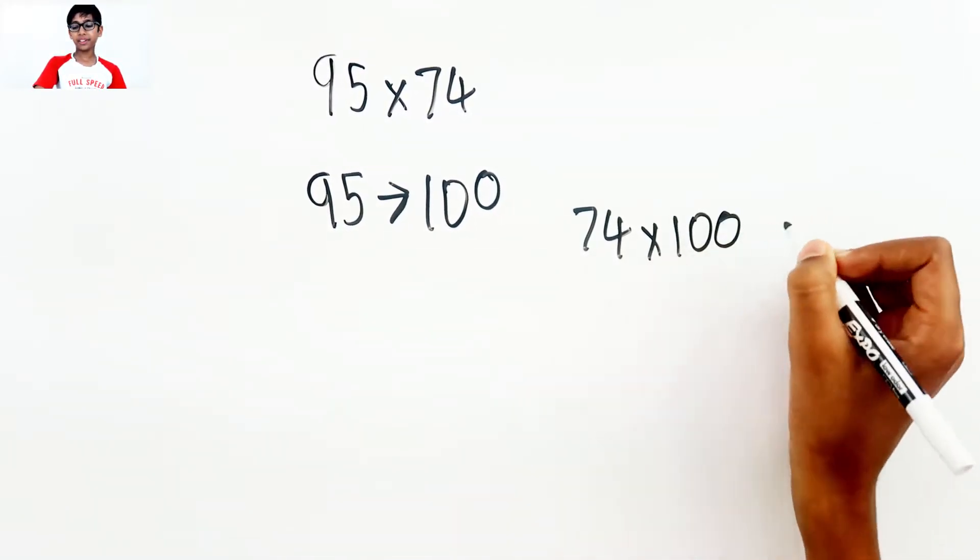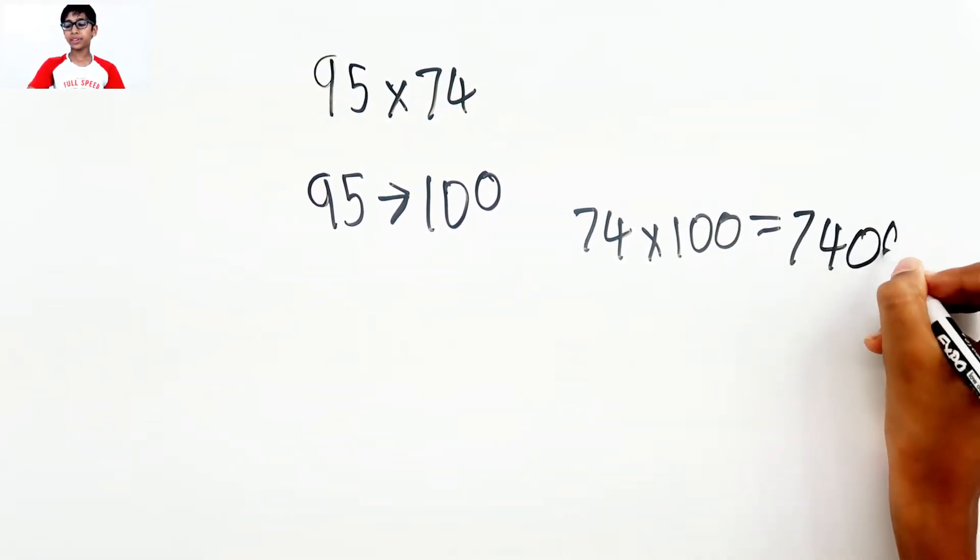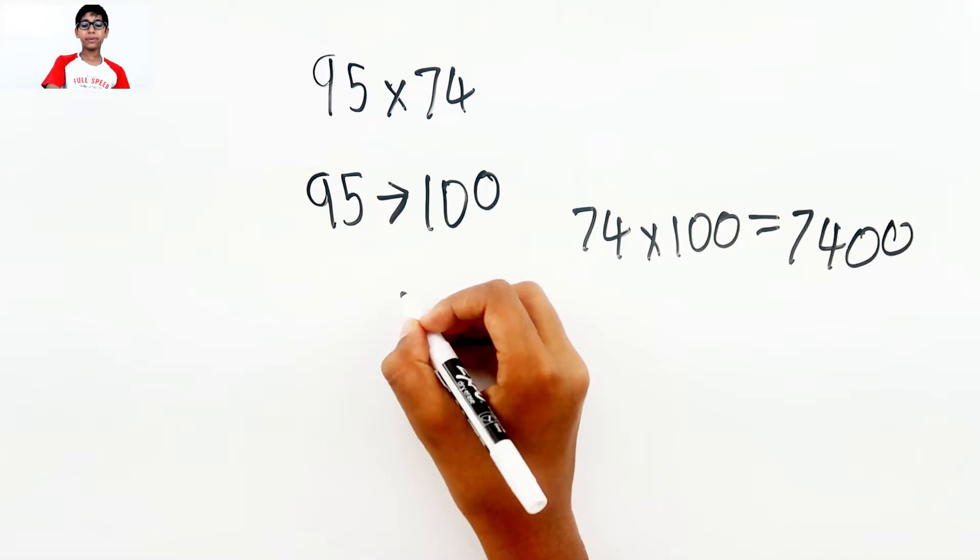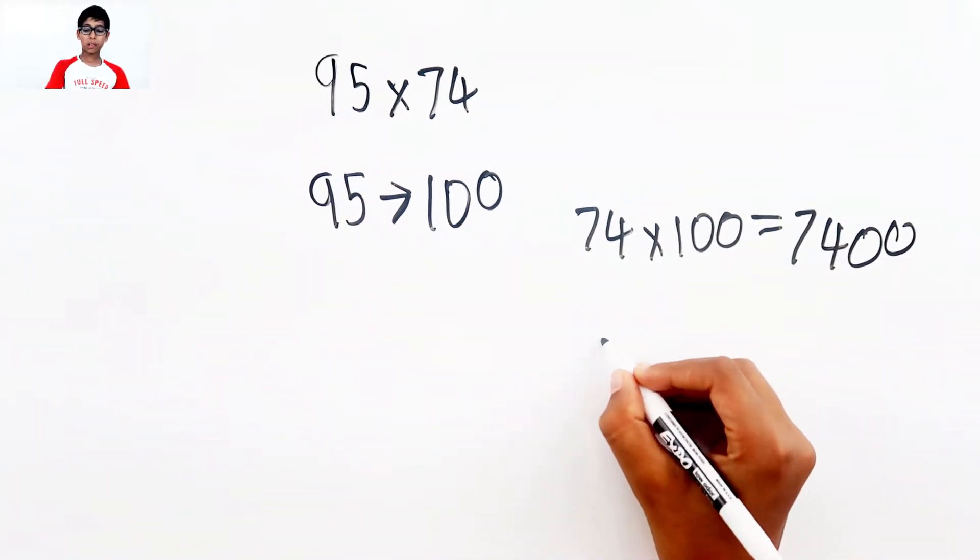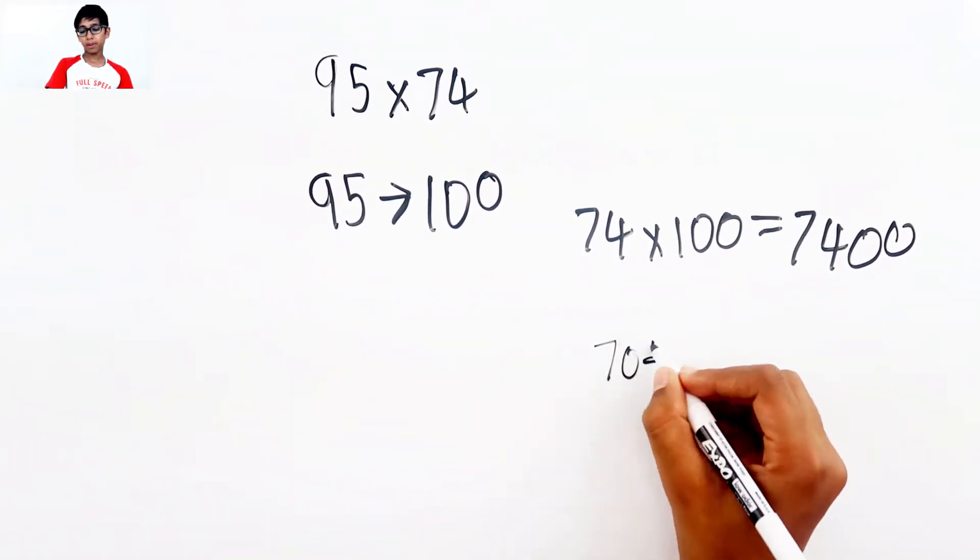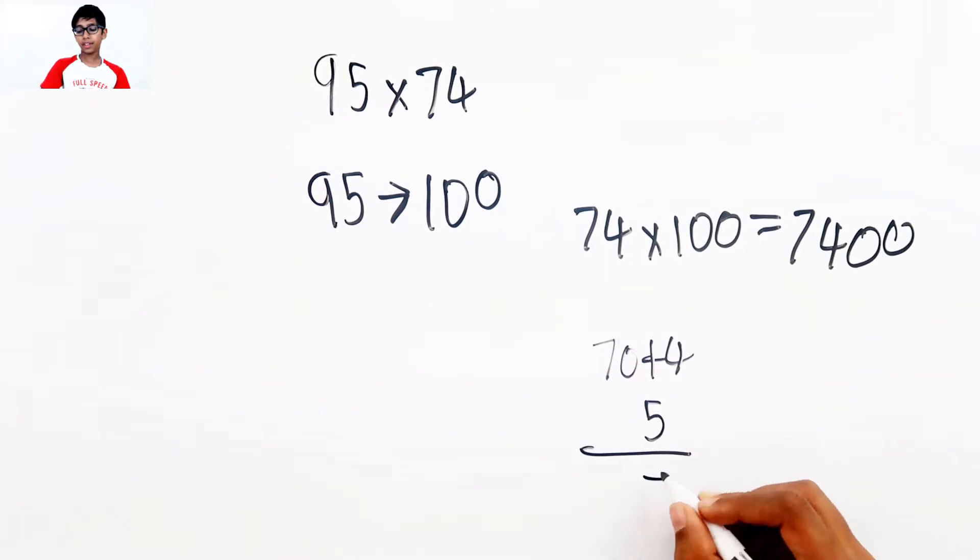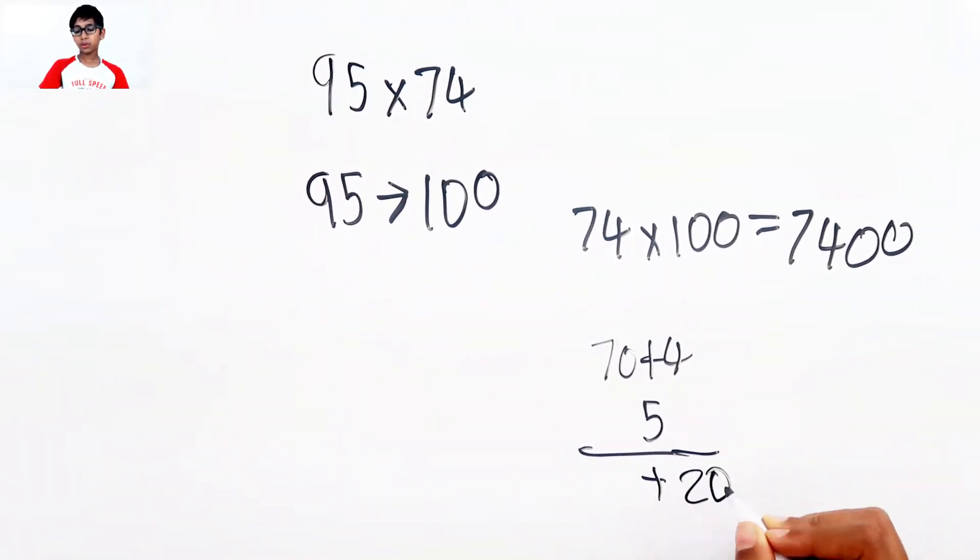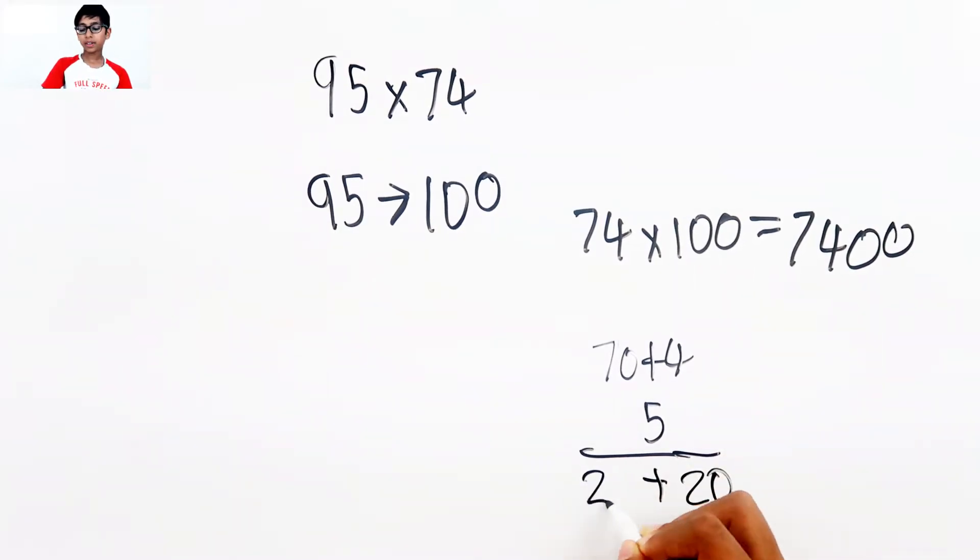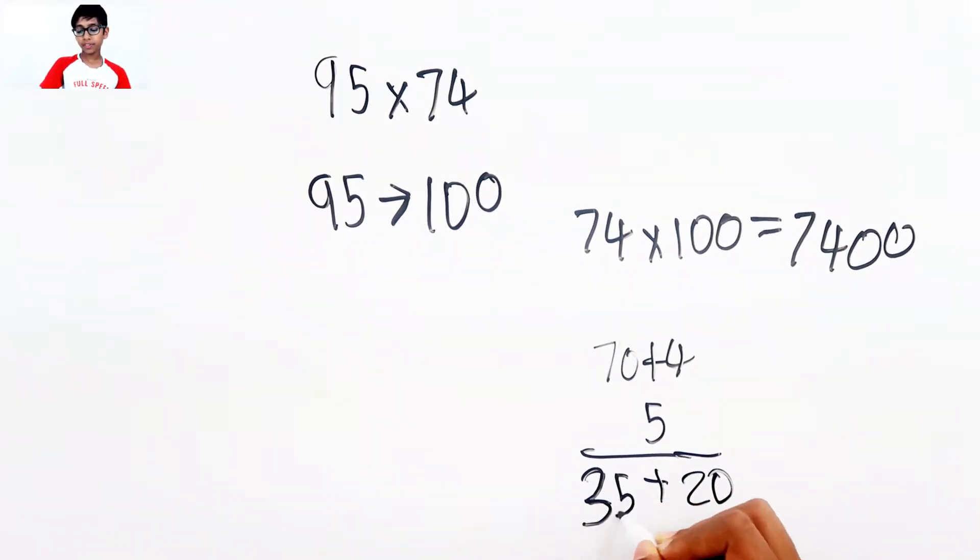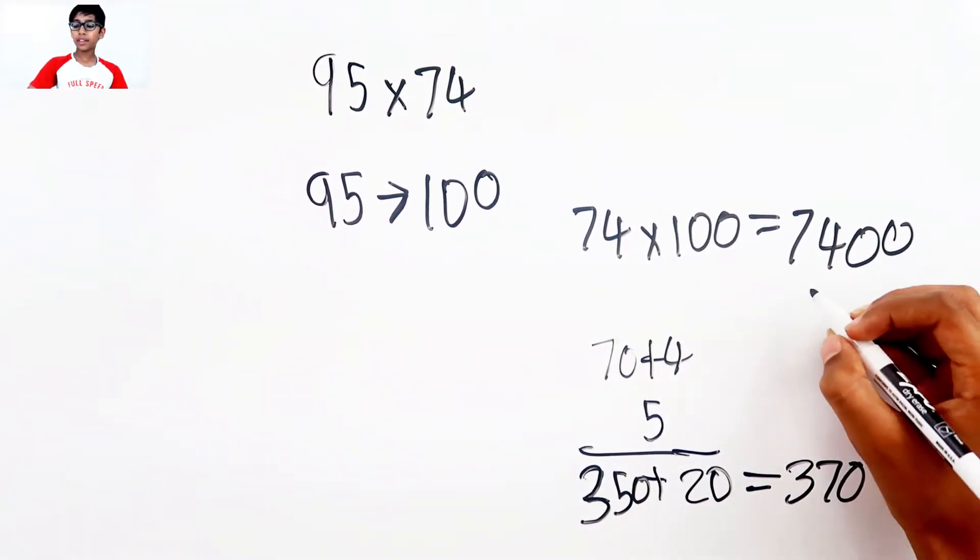100 equals 7,400. Now we need to do 74 times 5. So 70 plus 4 and then 5 here, plus 4 times 5 is 20, and 7 times 5 is 35. So 350 and 370.